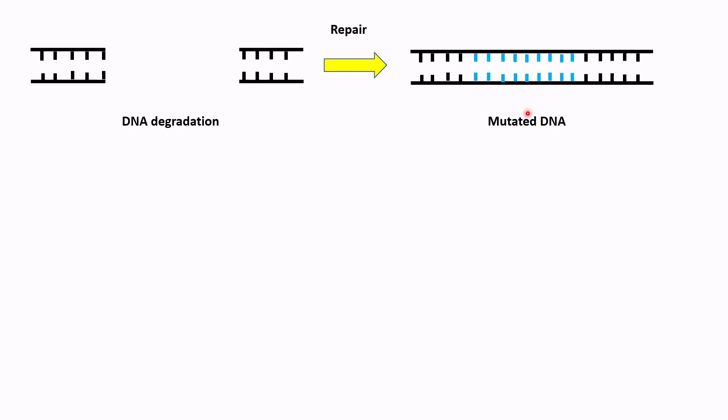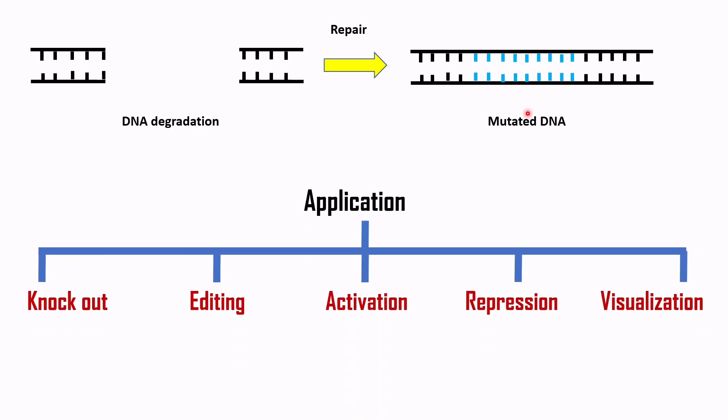But CRISPR is not only used for gene knockout — it is also used to edit, activate, or repress a gene. It is even used to visualize genomic loci using fluorophores. These are the applications of CRISPR, which we will learn about in the next session. If you liked my lesson, please do like, comment, and share my video. Thank you.